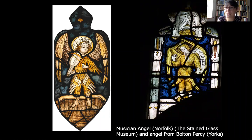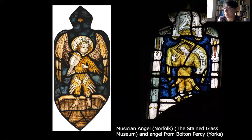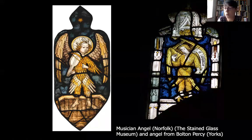Angels often took the tracery lights, sometimes images of God himself or the Trinity. I couldn't resist showing you these two wonderful feathered angels, which were very popular in the 15th century. The one on the left is probably from Norfolk and is today at the Stained Glass Museum; the one on the right from Bolton Percy in Yorkshire is still in the church. It's easy for us to forget that medieval England was Catholic, and churches looked very different - full of colour, with wall painting, polychrome marble, gilding, and painted sculpture. The church would have felt and looked quite different.